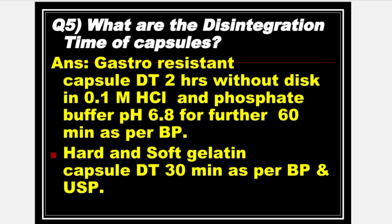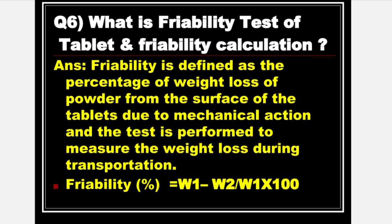Hard and soft gelatin capsule DT — 30 minutes as per BP. Next is: What is Friability Test of a Tablet and Friability Calculation? Answer: Friability Test is defined as the percentage of weight loss of powder from the surface of the tablet due to mechanical action, and the test is performed to measure the weight loss during transportation. Friability is equal to W1 minus W2 upon W1 into 100, where W1 is equal to initial weight and W2 is equal to final weight.